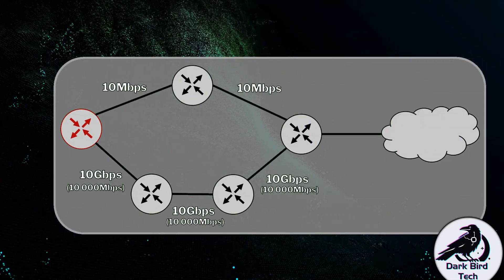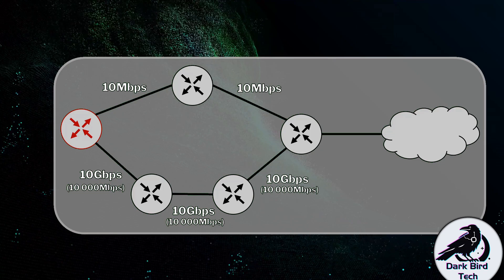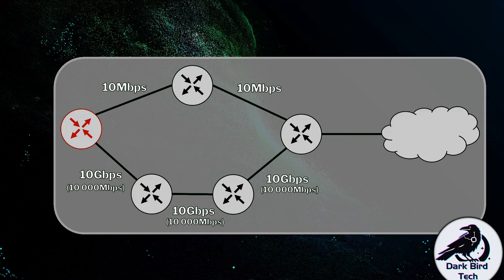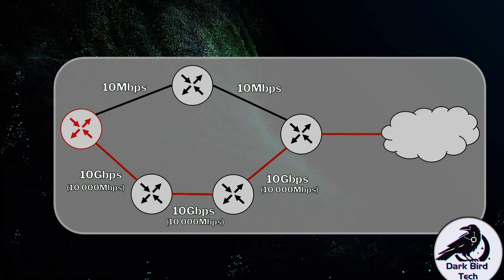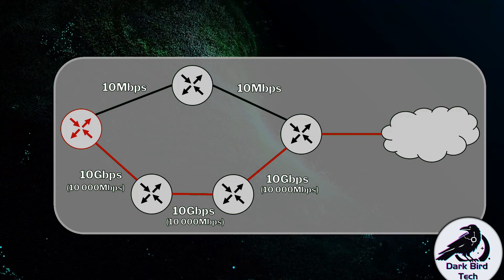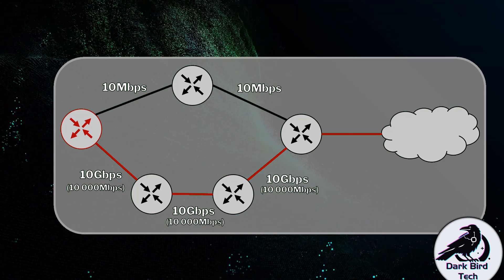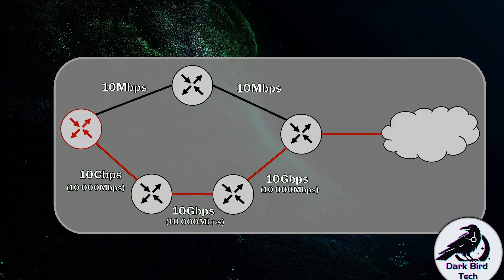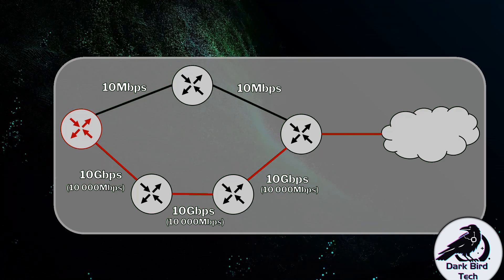Let's see what OSPF would do with the same example network used for RIP. OSPF favors the overall fastest pathway, so without even doing the arithmetic, OSPF would favor the 10 gigabit per second pathway through the bottom — even though it stops at one extra router on the way. We'd be going faster by a factor of a thousand compared to the top pathway.